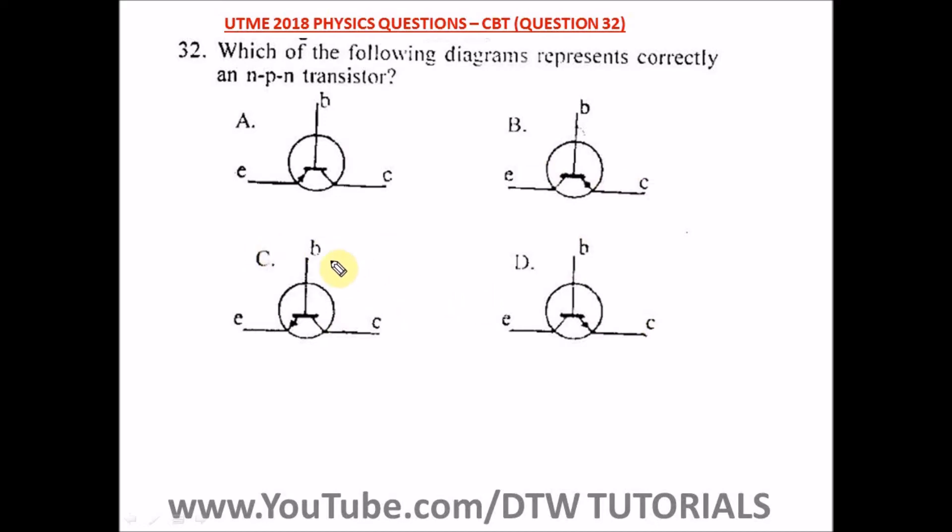For an n-p-n transistor, the base-emitter is forward biased. The base-emitter junction is forward biased, so current comes in here and we have